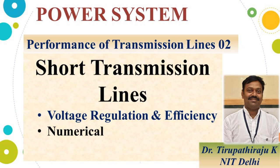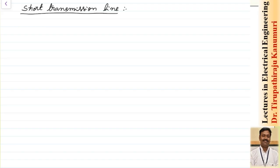Hi all, today we are going to discuss about the short transmission lines. The short transmission line is one whose length is less than 80 kilometers and generally the voltage is less than 20 kV.